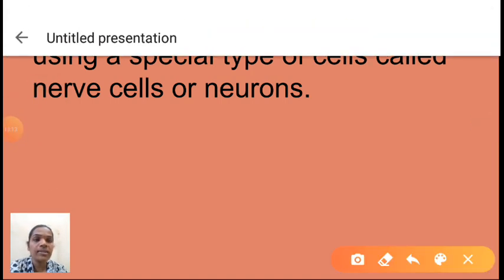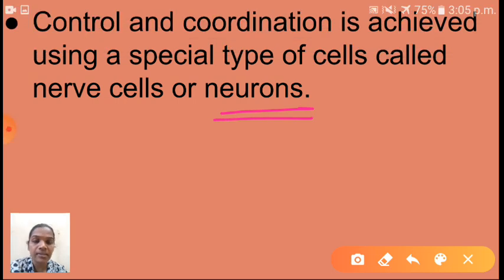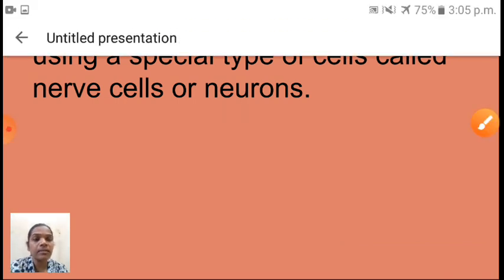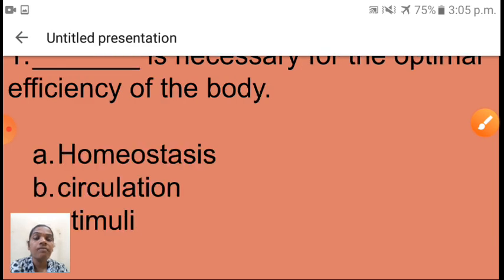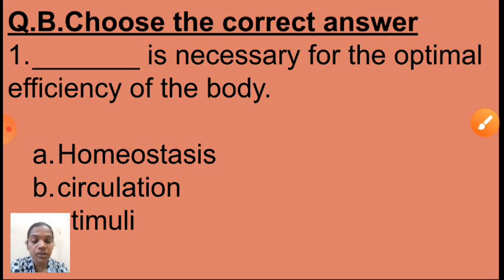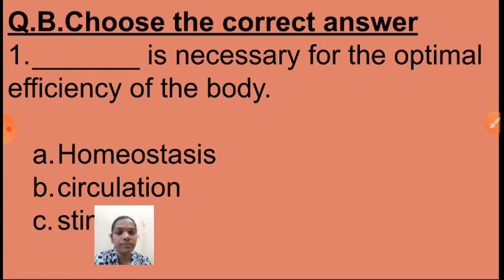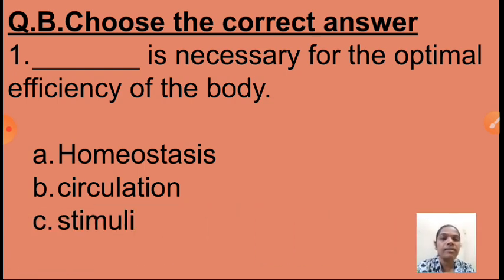About neurons and the nervous system we will discuss in the next session. Now, for your semester, let's see how questions will come — a small revision. Choose the correct option: blank is necessary for the optimal efficiency of the body.